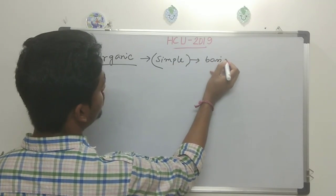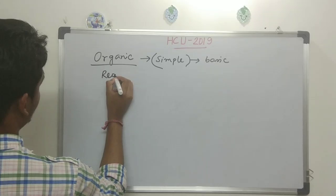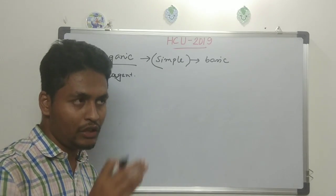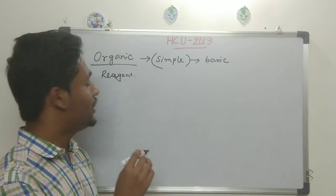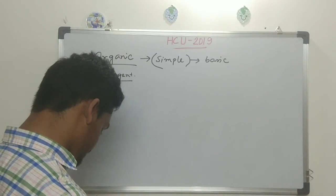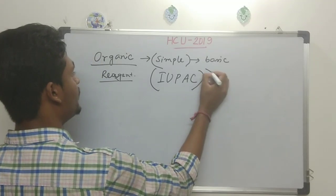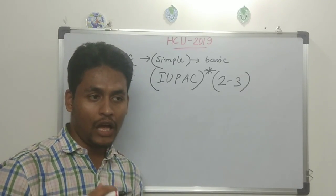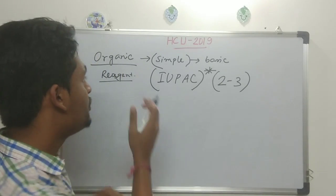To be specific, 2 to 3 important areas: reagents — not as difficult as in CSIR. Oxidation and reduction reactions are very important — they come every year. They ask what is the preferable oxidant or reductant. That is reagent chemistry. IUPAC naming is also very important — about 2 to 3 questions every year. They can directly ask the IUPAC name, or give an ozonolysis or bromination reaction and ask the name of the product.